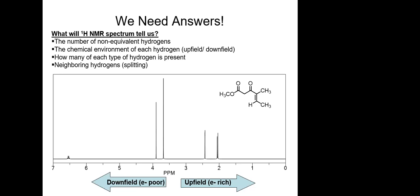So again, the number of non-equivalent signals tells you the number of different types of hydrogens, the chemical environment tells you their location, and what each hydrogen is connected to is determined by how many lines the signal is split into. Looking at this spectrum — how many signals do you see? Not lines, because some signals consist of multiple lines. How many signals total?